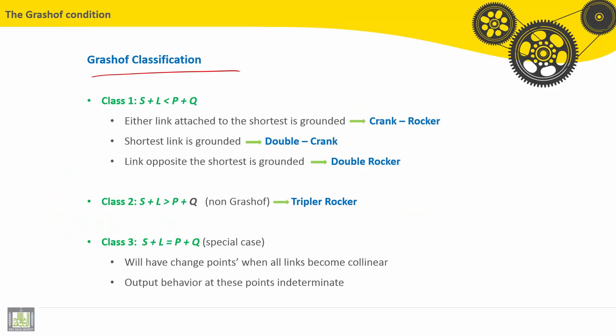Grashof classification Class 1: S plus L is less than P plus Q. If either link attached to the shortest is grounded, it is called a crank-rocker. If the shortest link is grounded, it is called a double-crank.